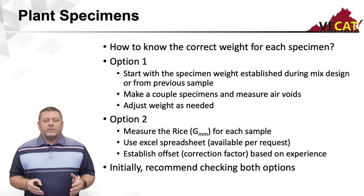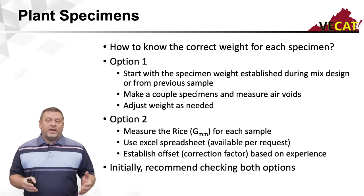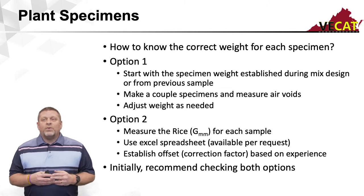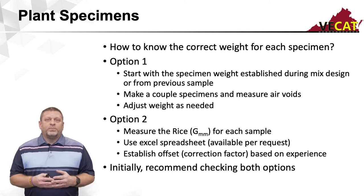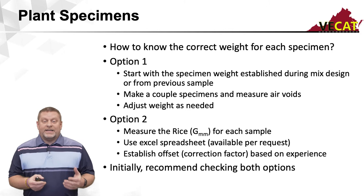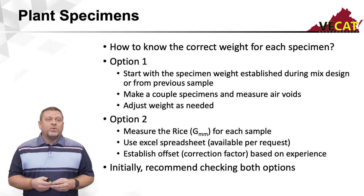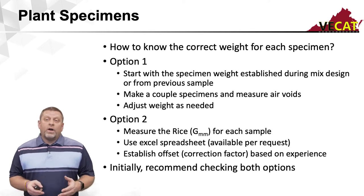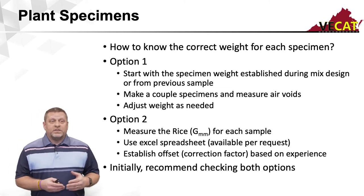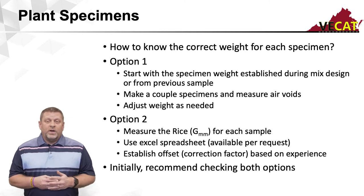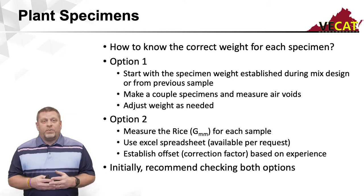We just saw how to properly split down to specimen weights. But how do you know what the correct specimen weight is during field production for your IDT-CT specimen? There are two recommended options. Option one is to start with the same specimen weight established during your mix design. Or, if it's your second or third production sample and you've already made an adjustment, you may use the same weight from a previous sample.